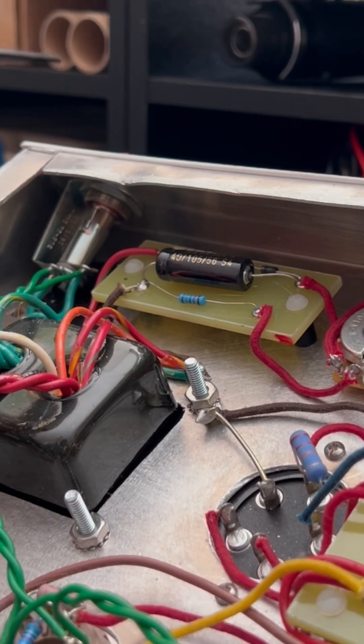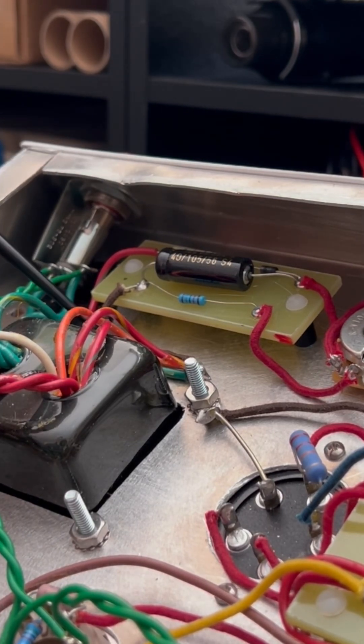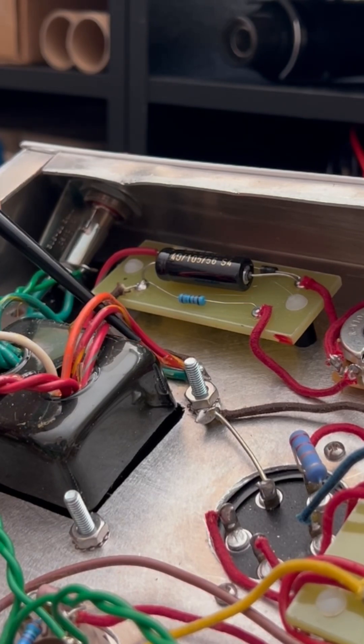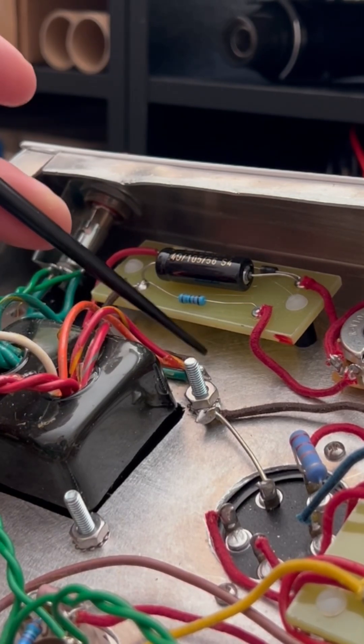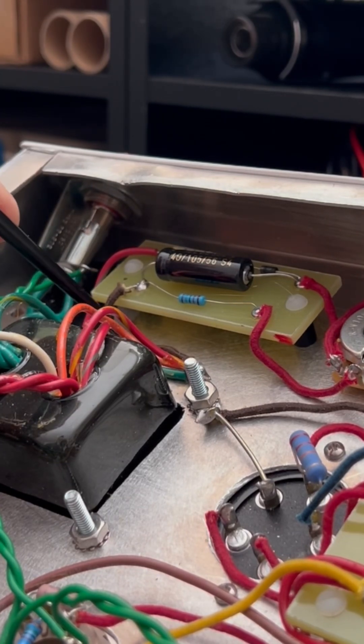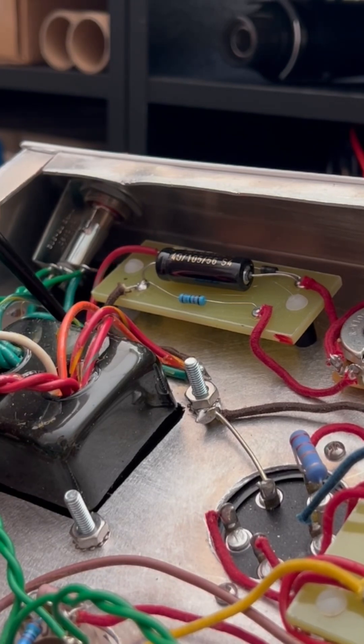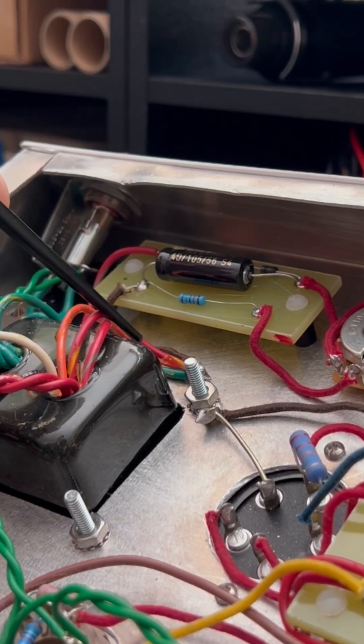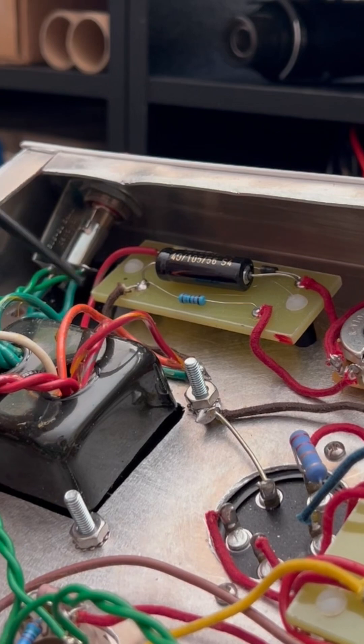But you have all of this heavy pulsing ripple stuff modulating the ground that these little sensitive supplies are sitting on. All the little sensitive returns like the bias and the filament supply, they're all getting modulated along with these big guys here, all the dirty stuff.